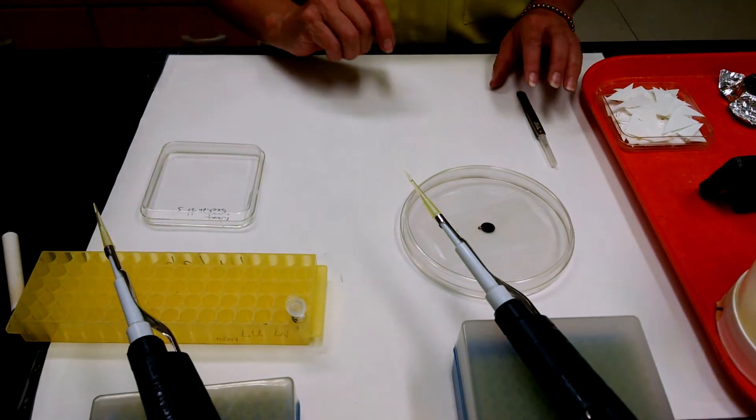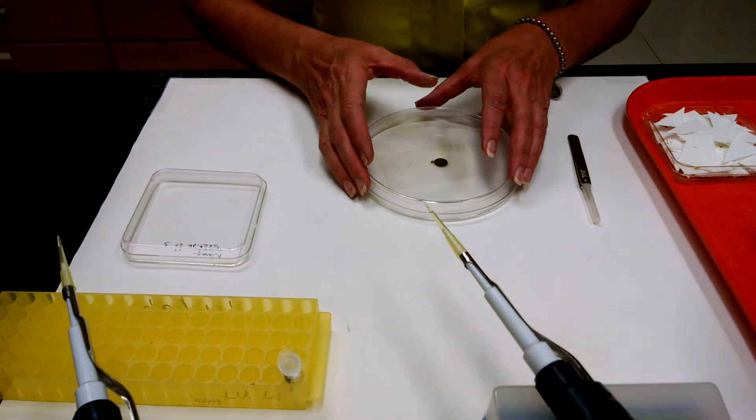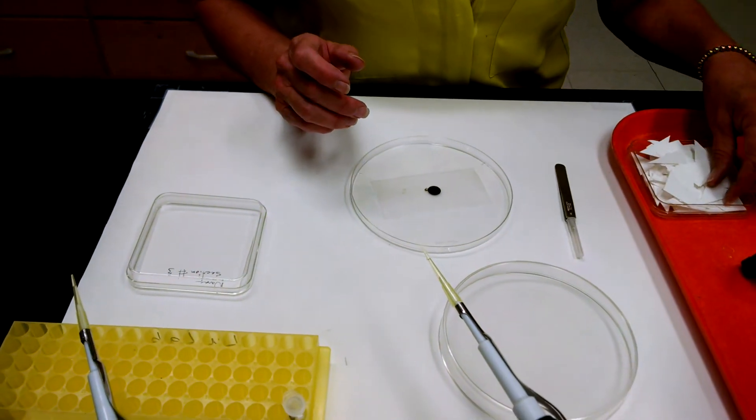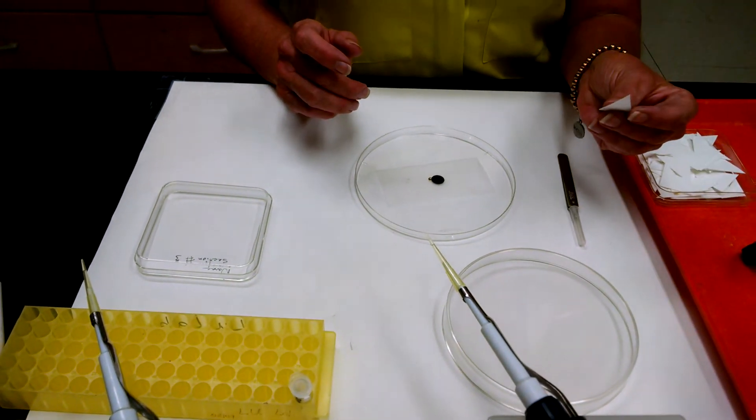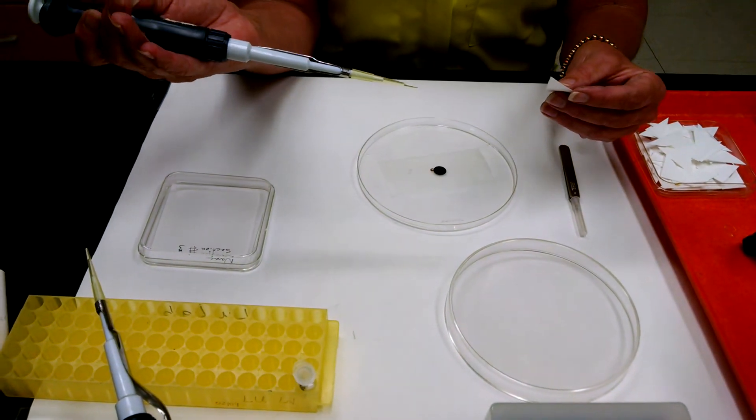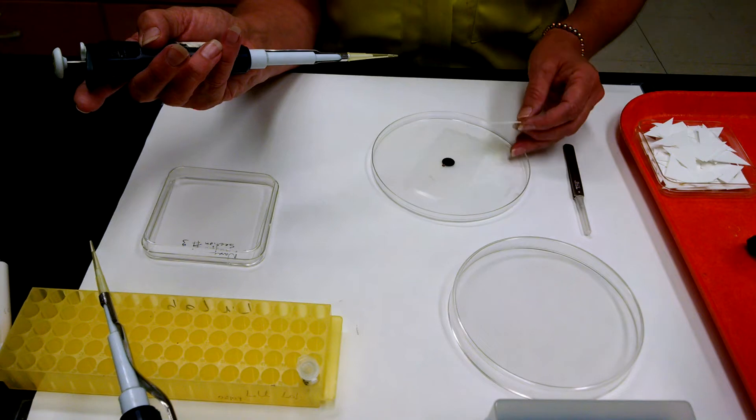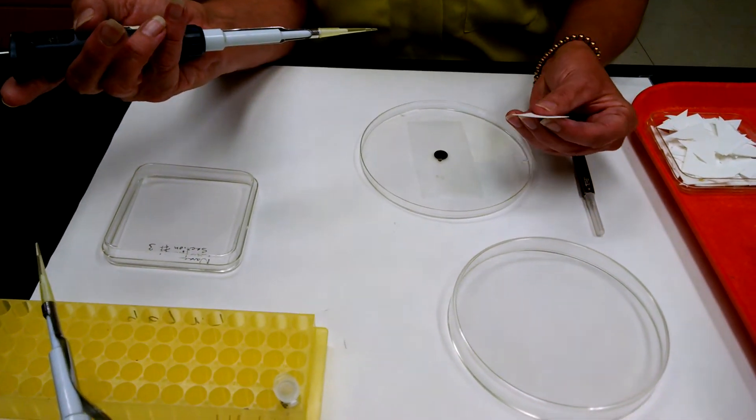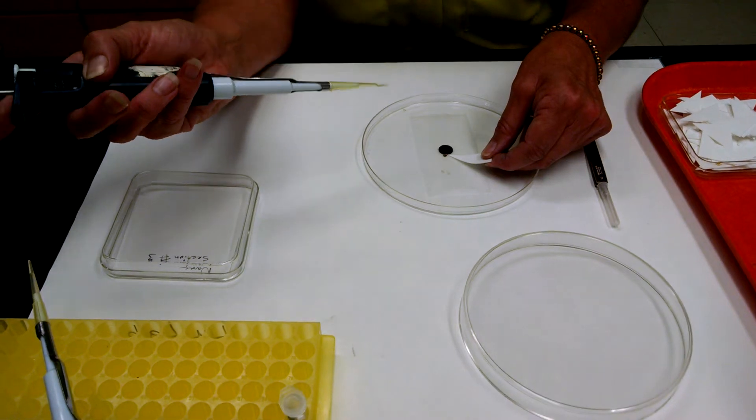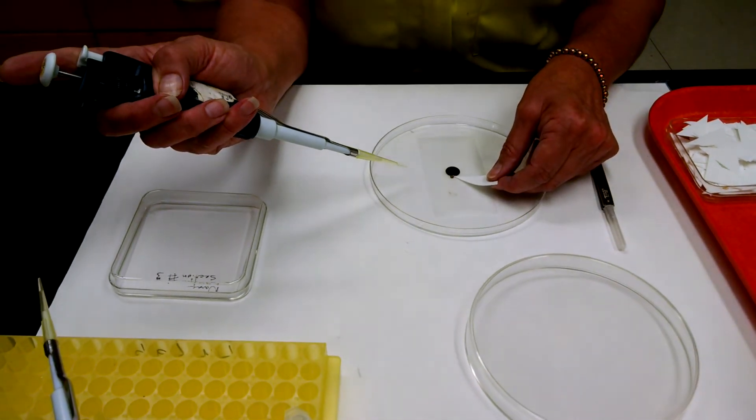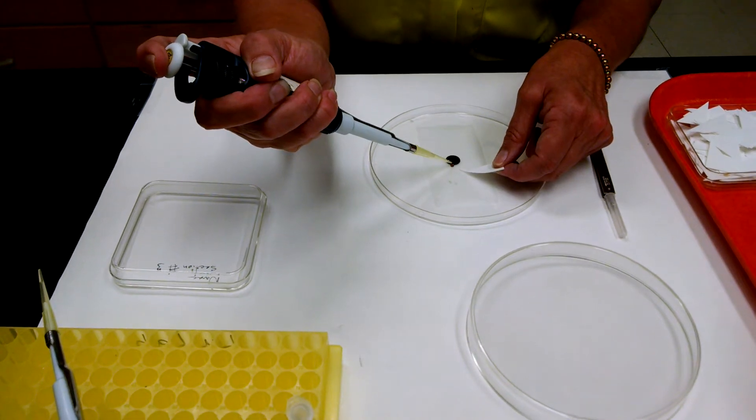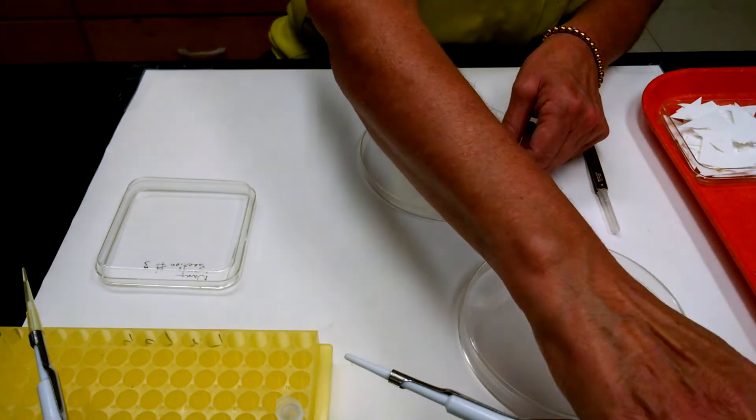So the most important thing of negative staining is not letting your grid dry out. So what I'm going to do is I'm going to get this triangle of Whatman paper and my water for the wash. And I'm going to just take the tip of the Whatman paper and touch it to the corner of my grid and the water will wick away. And I immediately add 10 microliters of the wash. Dispose of the tip.